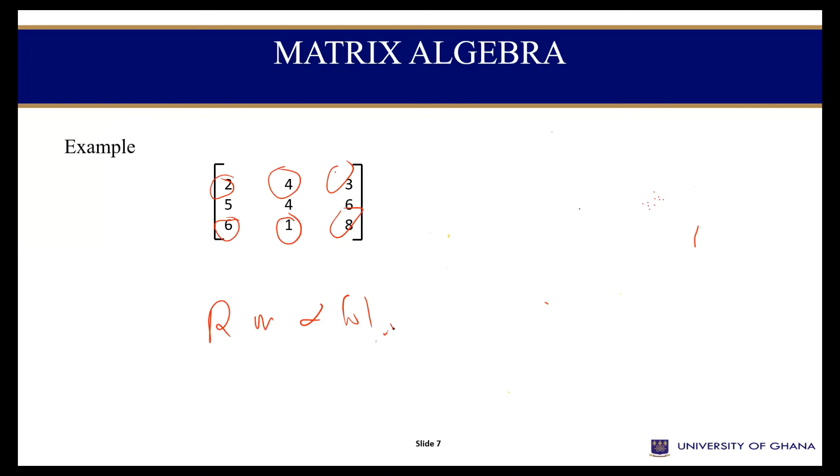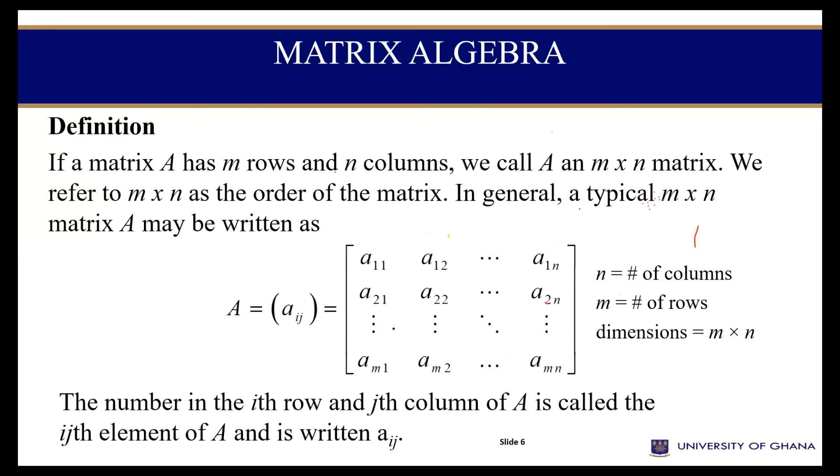So let's look at this side here. I've defined the dimensions already. I said that every element in any given matrix belongs to a row and a column at the same time. Therefore, if I have matrix A, giving us A_ij, I represents row, J represents column.